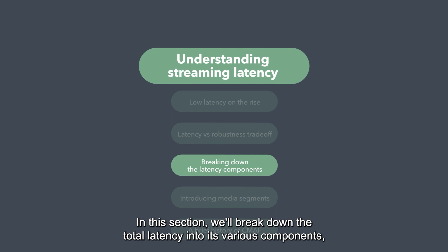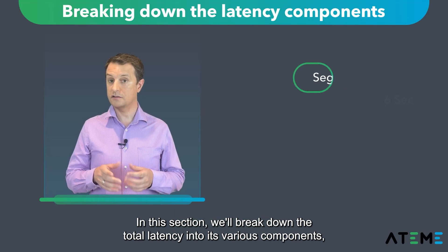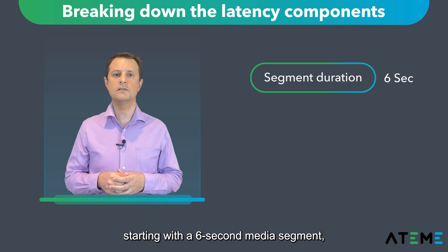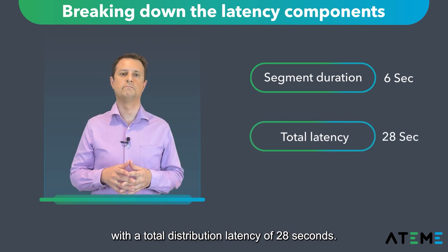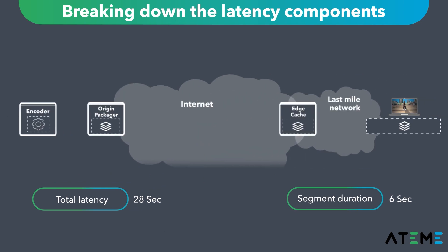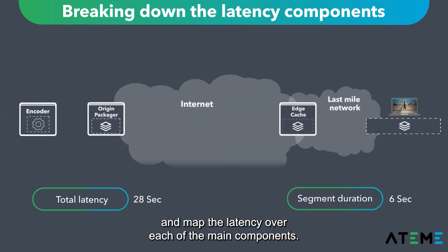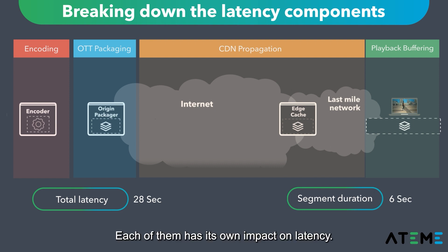In this section, we'll break down the total latency into its various components, starting with a six-second media segment with a total distribution latency of 28 seconds. Let's look at a traditional OTT workflow and map the latency over each of the main components. We have four main buckets corresponding to four different functions in that workflow, each with its own impact on latency.